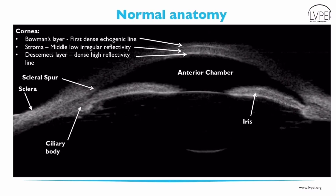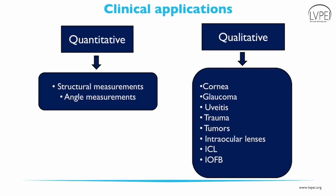The ciliary body can be clearly defined by UBM from the ciliary processes to the pars plana. The area under the peripheral iris and above the ciliary processes is defined as the ciliary sulcus. The zonules are seen as a medium reflective line extending from the ciliary processes to the surface of the lens. UBM has quantitative as well as qualitative applications, which we will discuss subsequently in this video.